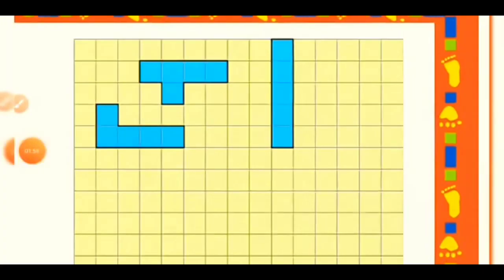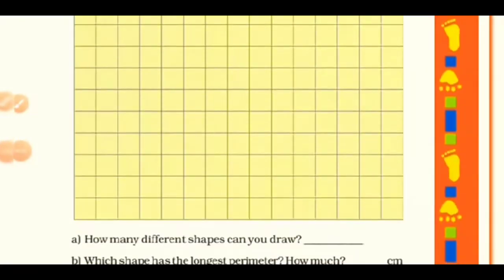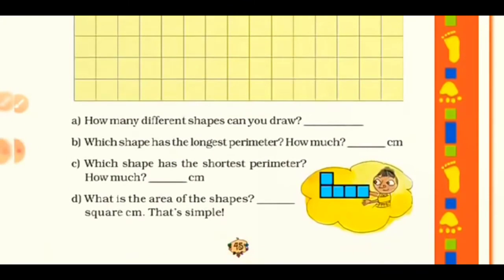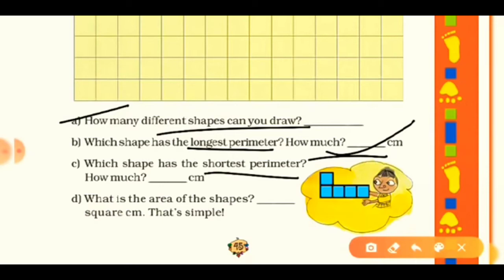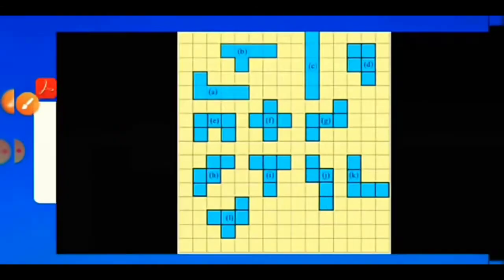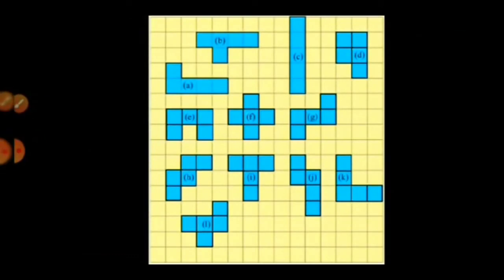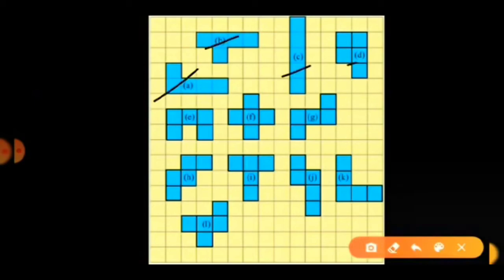On the next page, we need to draw more shapes and answer some questions: how many different shapes can you draw, find the longest perimeter, find the shortest perimeter, and find the area of the shapes. I have a picture showing pentominoes labeled A through F — 12 shapes in total, all made with five squares.